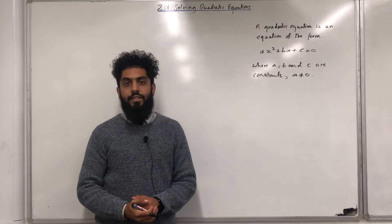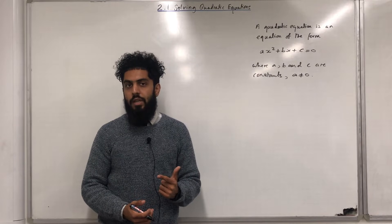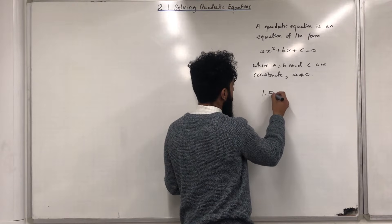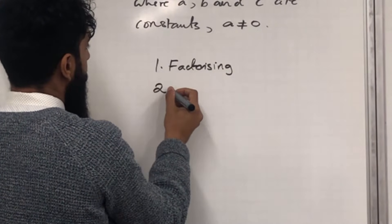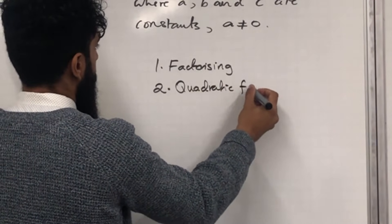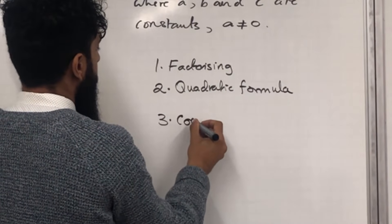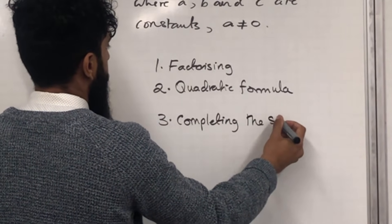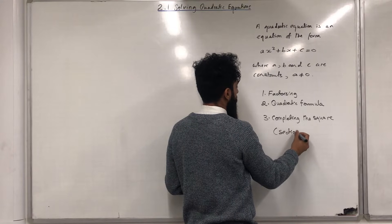We can solve a quadratic equation by factorising, using the quadratic formula, or by completing the square. Number one: solve by factorising. Number two: solve by using the quadratic formula. Number three: solve by completing the square. Completing the square will be covered in section 2.2.